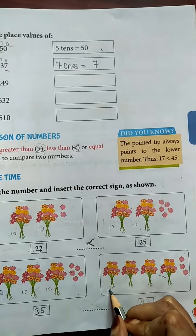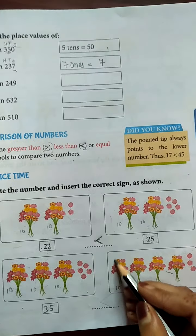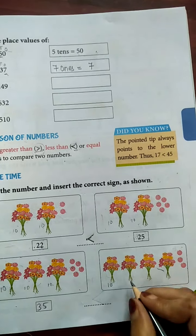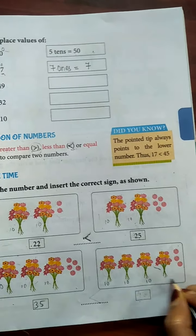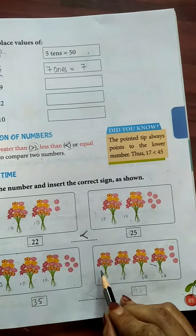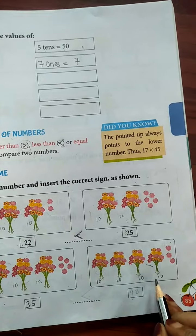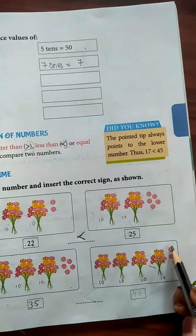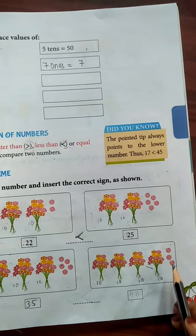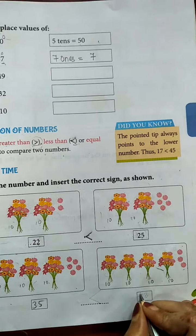Now next, again this is the bundle of 10 flowers. 10, 10, 10 and 10. 10 plus 10, 20. 20 plus 10, 30. 30 plus 10, 40, 41, 42 and 43.